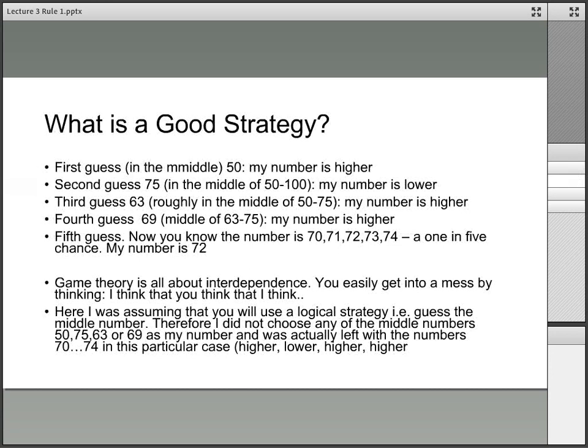What would be your best strategy in playing this particular game? Well, the best strategy would be to put your first guess in the middle. You would guess 50. I would tell you that my number is higher. Your second guess, once again in the middle of 50 and 100, is 75. I would tell you my number is lower. Your third guess, roughly in the middle of 50 and 75, is 63. I would tell you my number is higher. Your fourth guess, now you know the number is 70, 71, 72, 73 or 74. For your fifth guess, you have a 1 in 5 chance. My original number is 72.